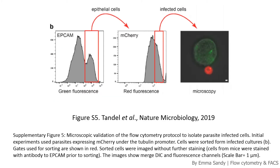This is another way to represent the same data — by histogram. Here we can also see how the host cells are selected. Similar to my data, the authors are interested in epithelial cells. First they selected EpCAM-positive host cells, then looked by red fluorescence for host cells infected with red parasites. Here we can see the host cells in green and the parasites in red. The contour plot and the histograms are two different ways to show the same data.